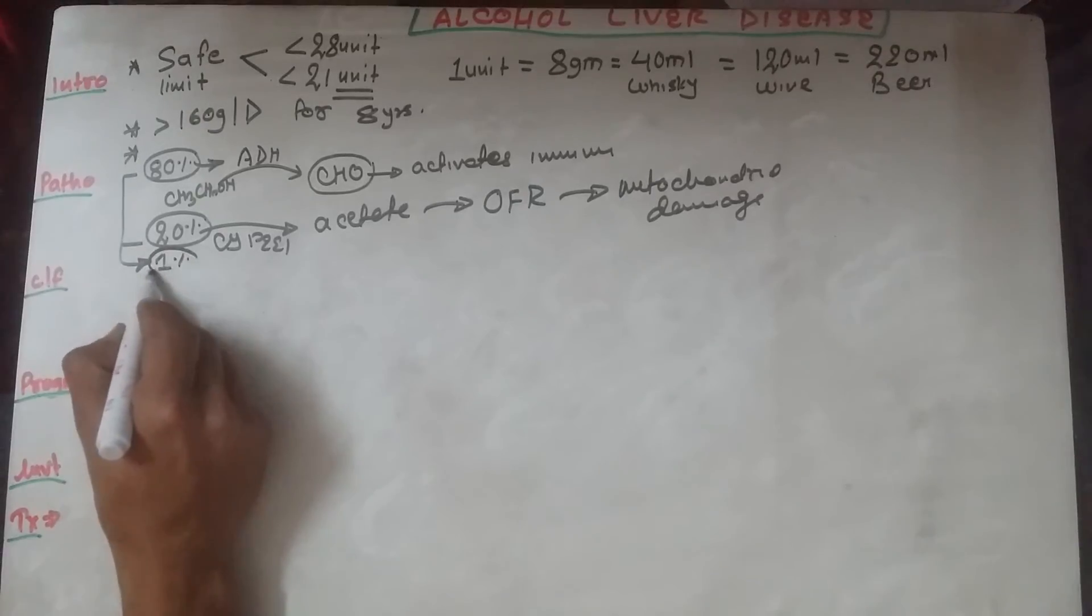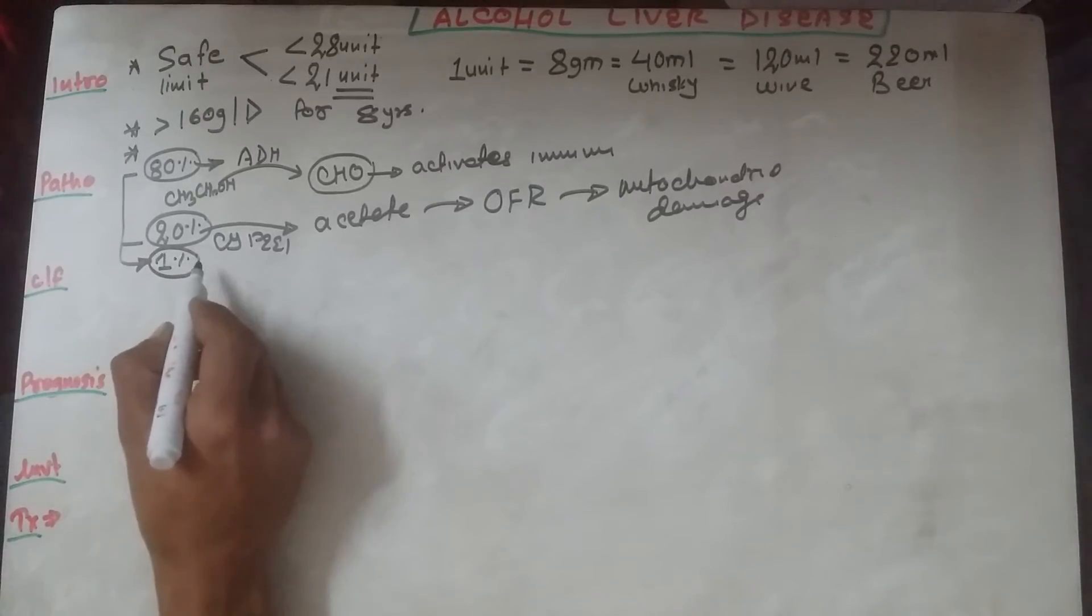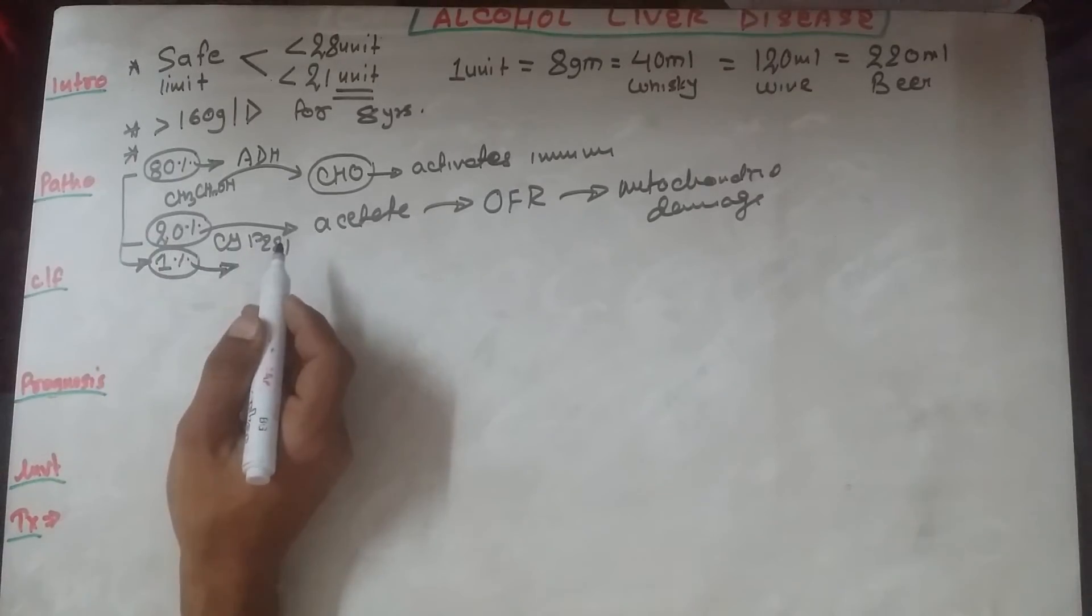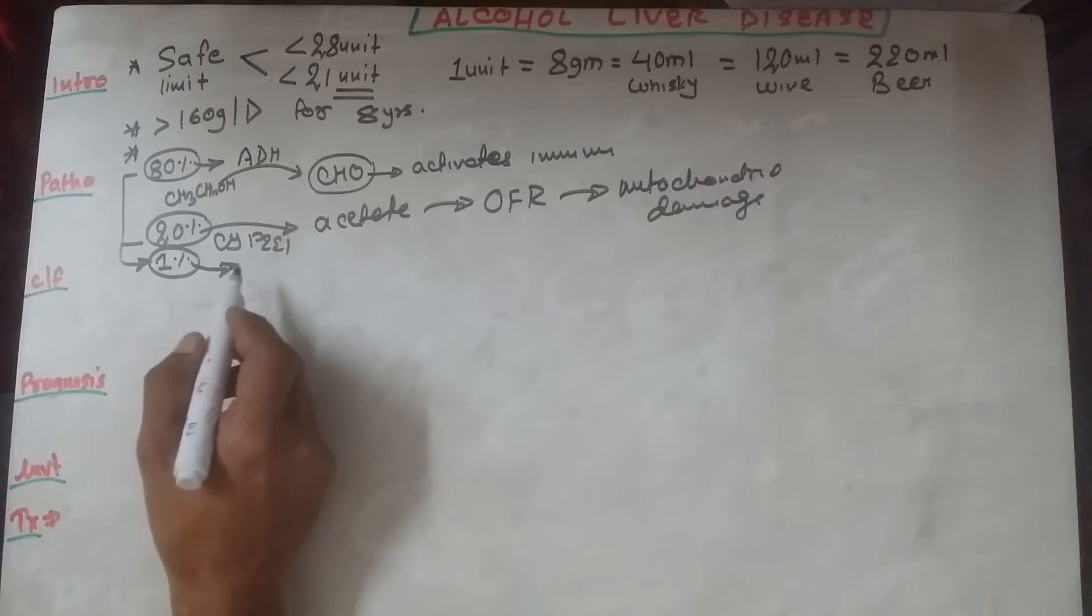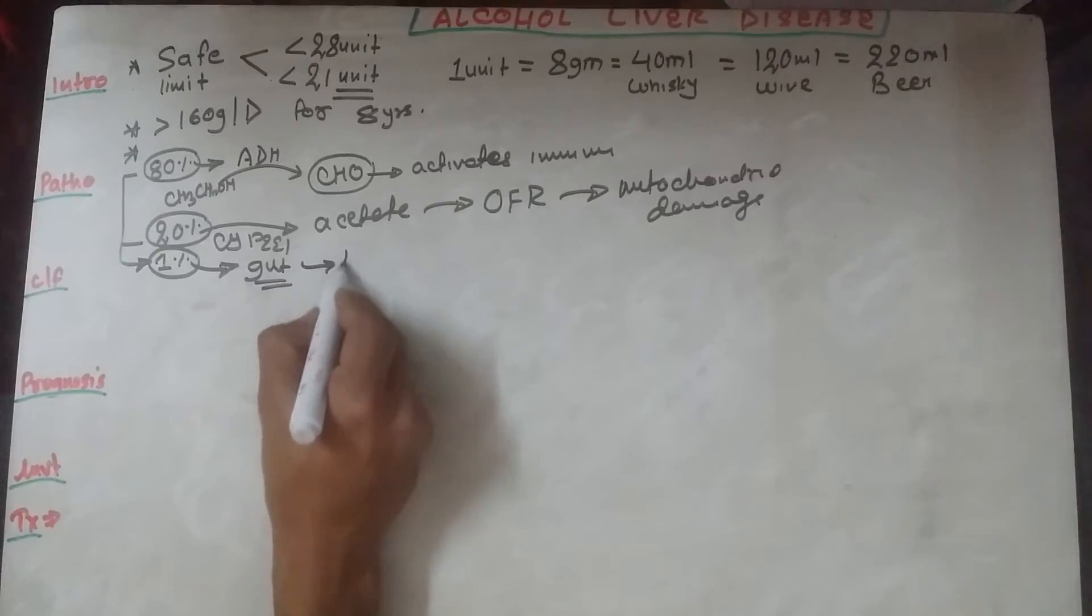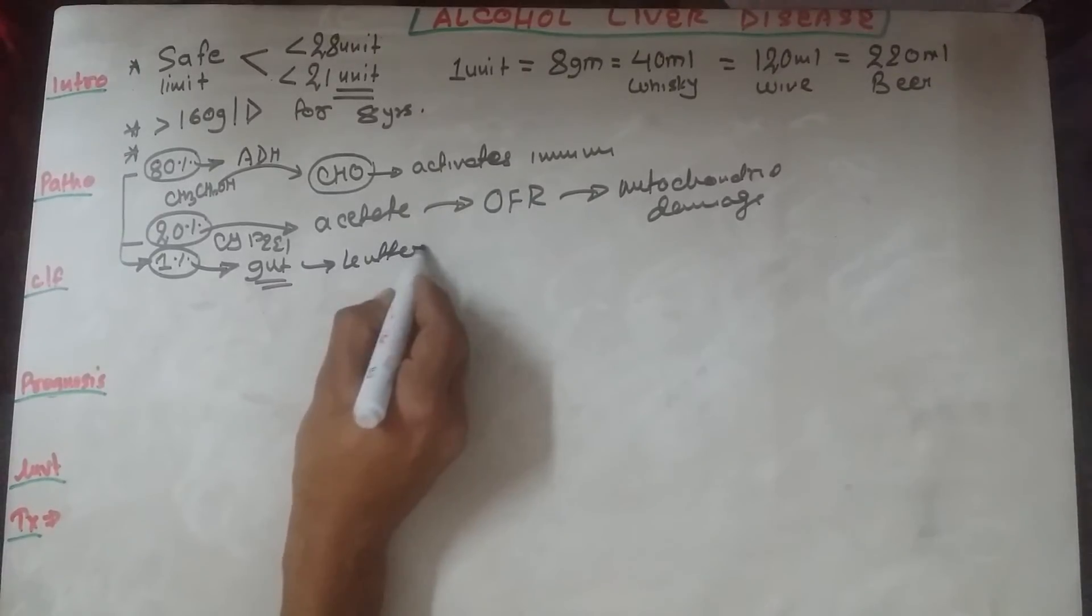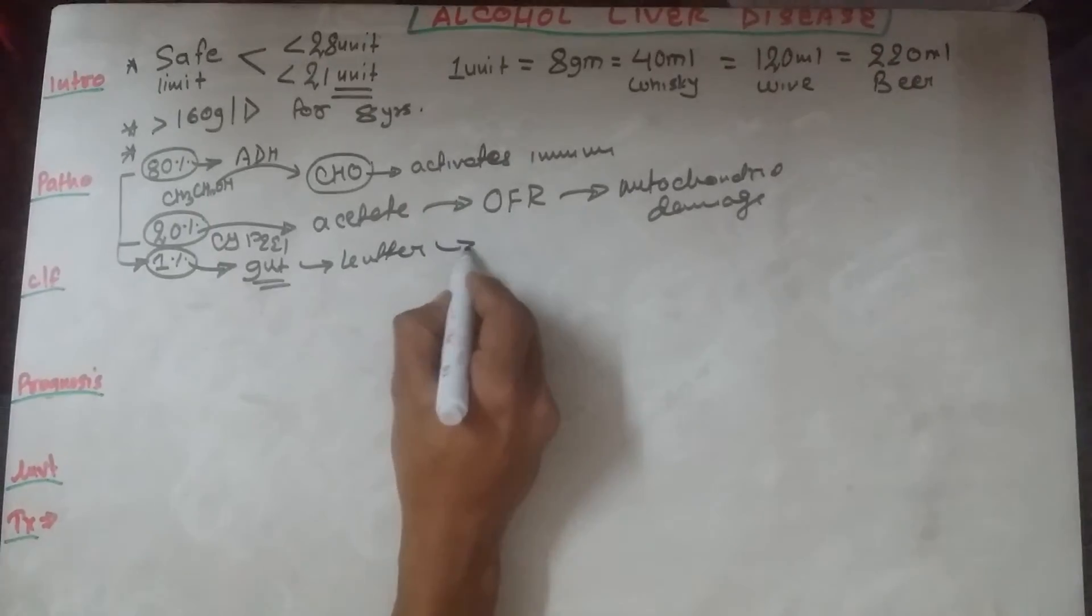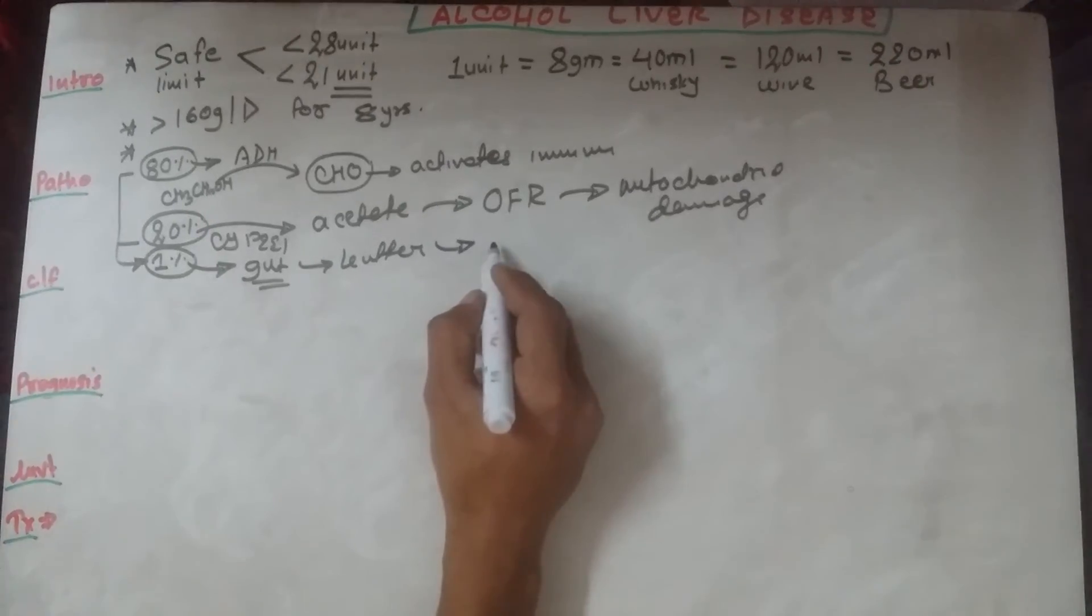Some amount of alcohol gets absorbed by the gut, almost 10 to 20% of the alcohol, which can activate the Kupffer cells, resulting in inflammatory response from the liver. This inflammation results in alcoholic liver disease. These were the three mechanisms by which alcohol is metabolized and causes liver disease.